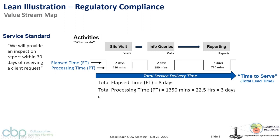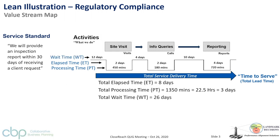There's also processing time — the hands-on time, which is typically less than elapsed time. A query meeting may take three hours of processing time, but scheduling and coordination takes two days overall. The real killer in most business processes is wait time — when the ball is passed from one functional group to another before it's picked up. The total wait time plus elapsed time here is 34 days, so they're not meeting their service standard.